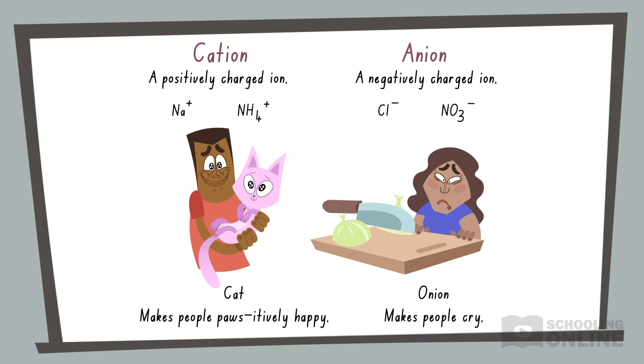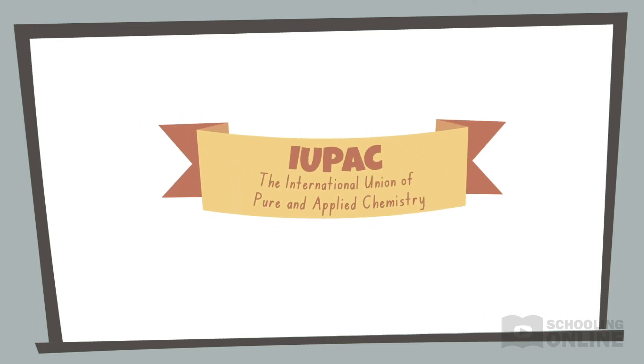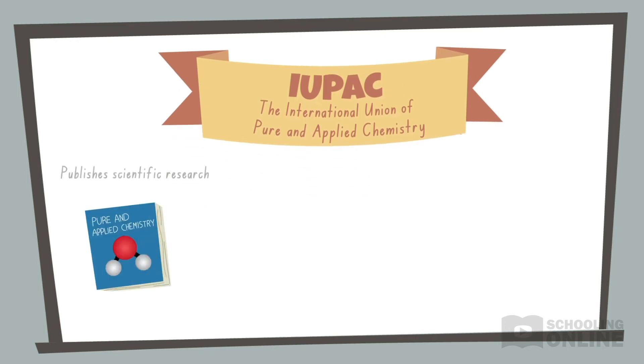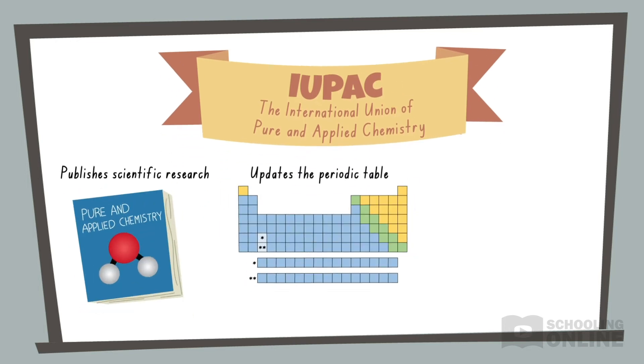The IUPAC is the International Union of Pure and Applied Chemistry. This is an important organization that publishes scientific research, updates the periodic table, and establishes chemical nomenclature.